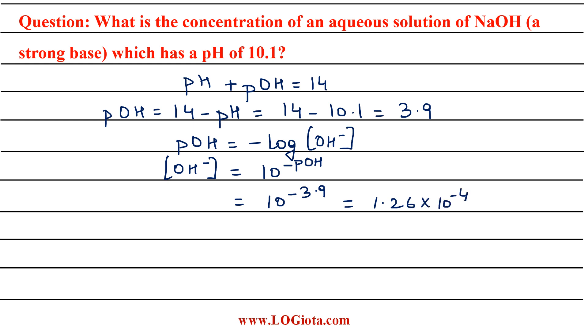Now this is the concentration of OH negative, so the units for this will be molar. In this solution, NaOH is present, so the concentration of NaOH will be equal to the concentration of OH negative, which is 1.26 times 10 to the power minus 4 molar. So the answer for this question is 1.26 times 10 to the power minus 4 molar.